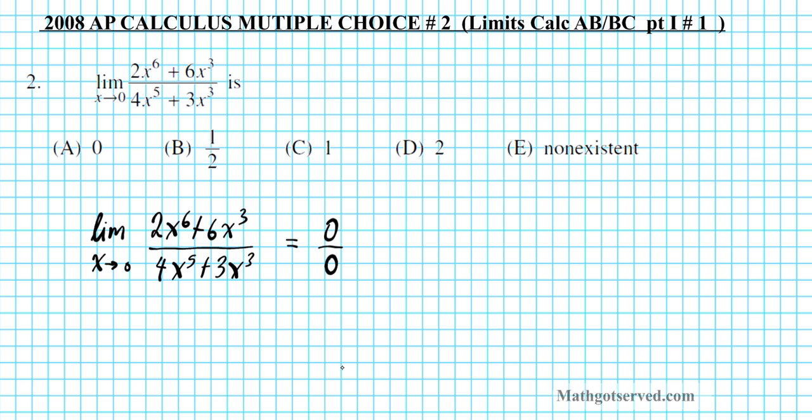So does this mean that the limit is non-existent? The answer is no. You cannot automatically assume that it's non-existent when you end up with 0 over 0, which is an undefined expression. What we know for a certainty is that there is some form of discontinuity at x equals 0.